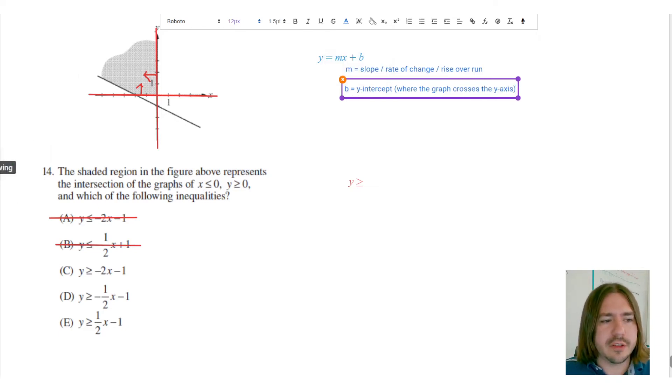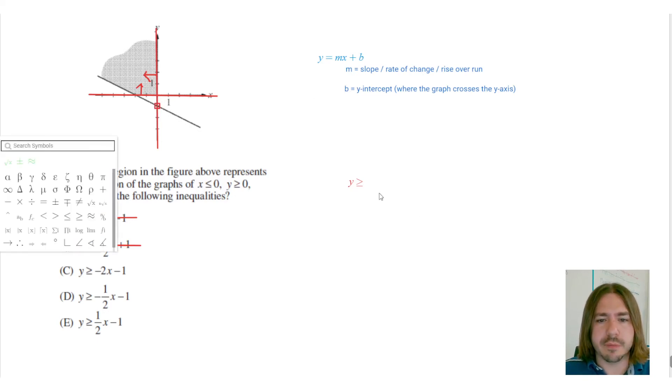So we can see clearly on the graph that the y-intercept is negative one, because we can see right here that's where it's crossing the y-axis. Y-axis is the vertical axis. So that means that b has got to be negative one.